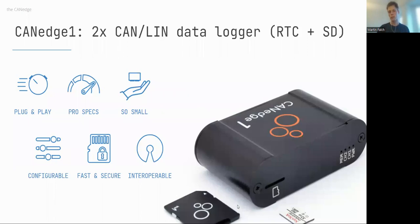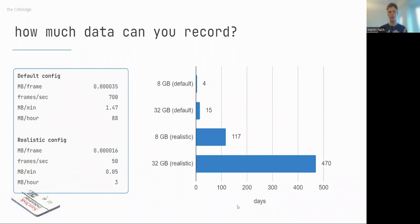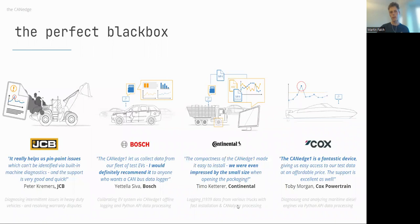A common question is: how much data can you record? On an 8 GB SD card, recording all data from a typical truck at around 700 frames per second, you can record for four days straight. On a 32 GB card, that's 15 days of 24/7 logging. When the card is full, the device automatically deletes the oldest data for a rolling window. In practice, by filtering signals, you could achieve 100 to nearly 500 days of recording.